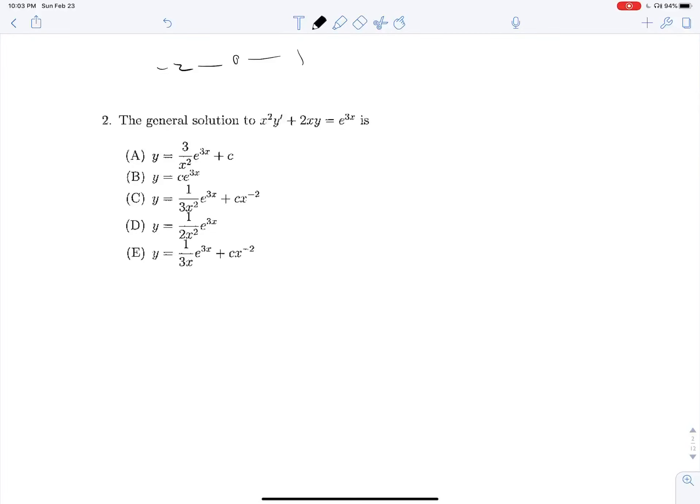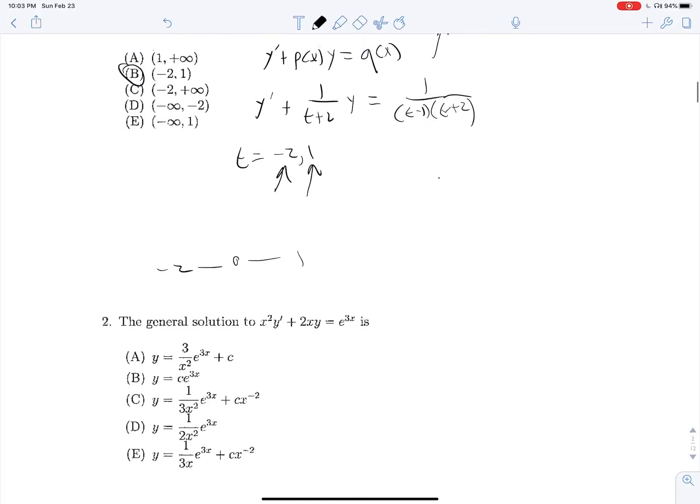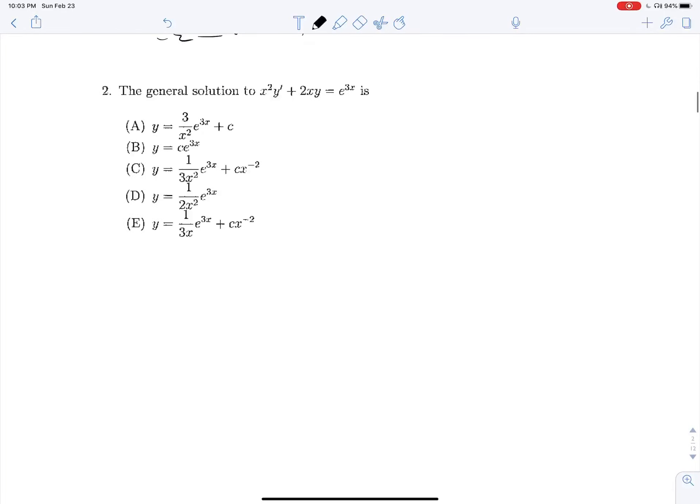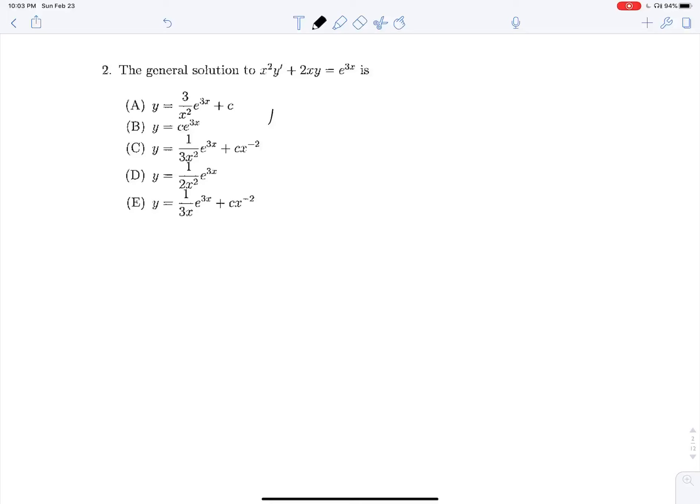2, the general solution to this guy is what? Let's do the same thing we did, divide out an x squared so our y prime is all by itself. So y prime plus 2 over x y is equal to e to the 3x over x squared. So we're going to do the integrating factor technique for this.